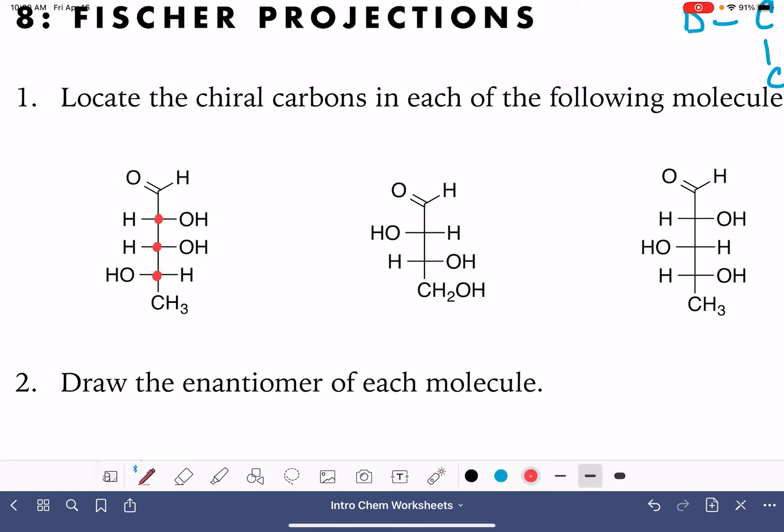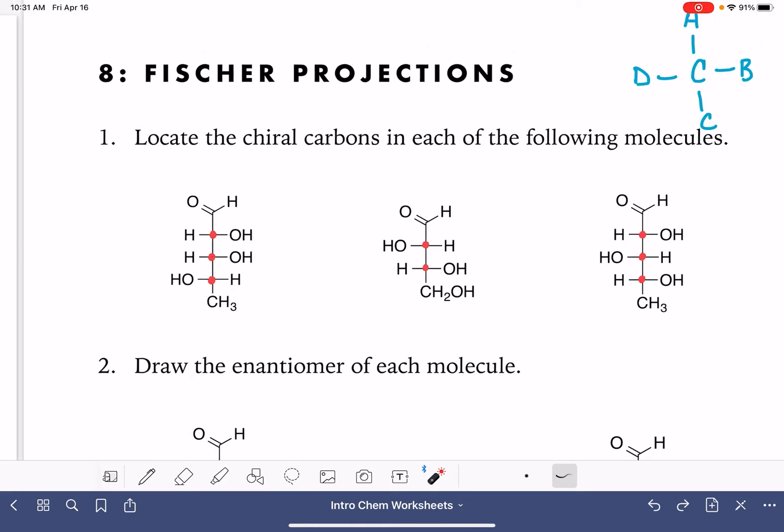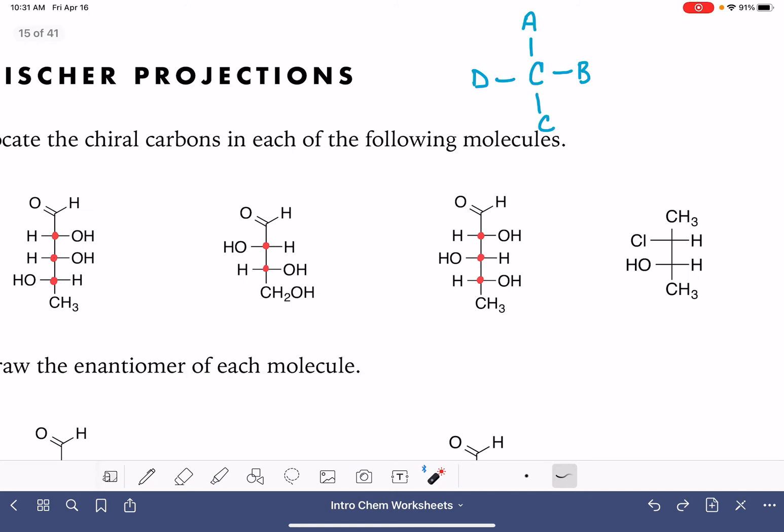And in a Fischer projection in general, the carbon atoms that are at the intersections of the horizontal and vertical lines, those are almost always chiral. It's a good idea just to kind of double check as you're working on these types of problems to make sure that there isn't a trick here. Like perhaps maybe somebody puts two OHs. That would be sneaky. If there were two OHs here, that would mean that this carbon atom had two identical groups and then it wouldn't be chiral. That's not the case here though.